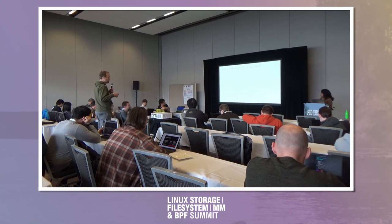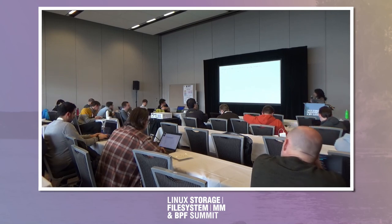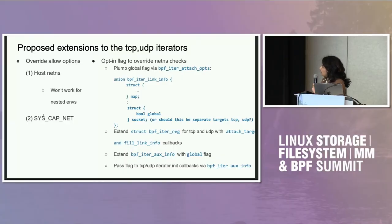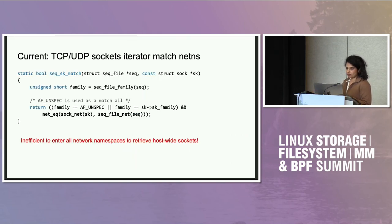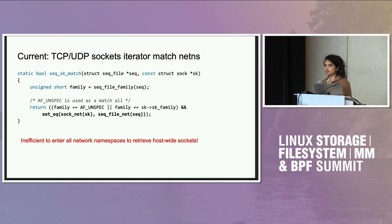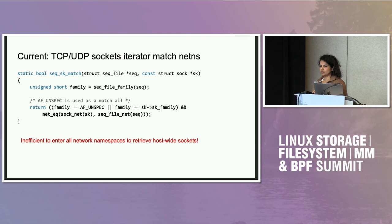Do you have a second topic? Yes. Just to close the loop — once we have plugged in the new file descriptor into the iter link info, we can plumb it down to the init callbacks through this iter aux info struct that stores additional extensible information. One question: can you go back to the previous slide? Assume I want to iterate all network namespaces — the BPF program will want to filter by network namespace. Right now in the kernel it's doing a net pointer equality check, so how can the BPF program filter by network namespace — by some ID in the network namespace?